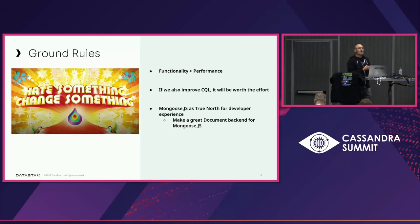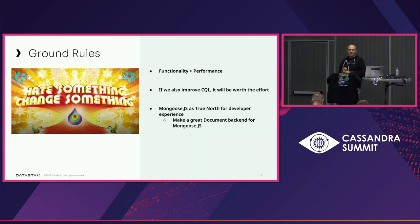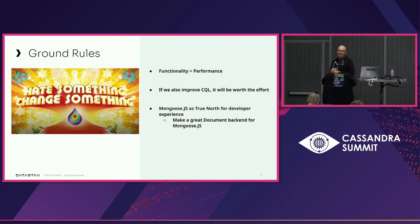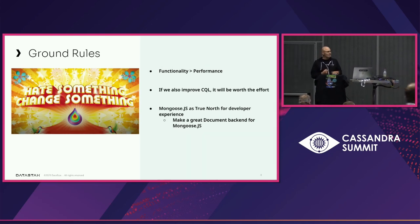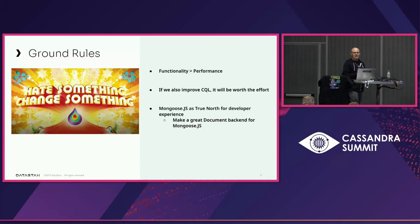Functionality is more important than performance. We will get to performance — it will be good enough and we will make it better. If there's something hard to do and it makes Cassandra and CQL better, then we should really put in the effort. We had to work out what that Node.js developer was looking for. We don't have Node.js developers using Cassandra, so we partnered with a project called Mongoose.js — an object document mapper on NPM.